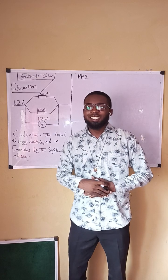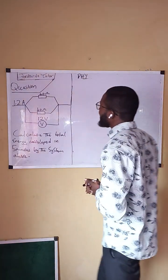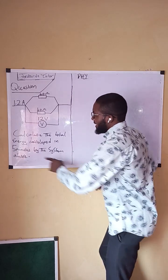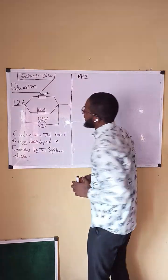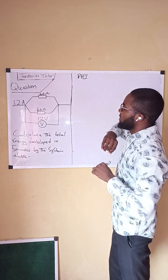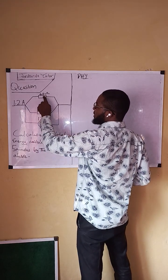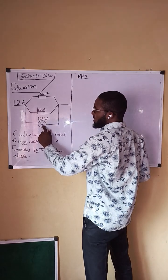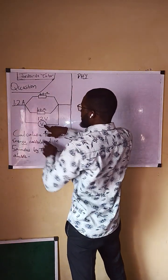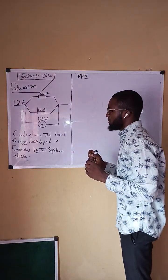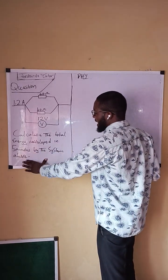Welcome back everyone. Today's tutorial is on physics. The question on the board says: calculate the total energy developed in five minutes by the system above. The diagram shows a circuit with a current of 1.2 amperes, two resistors of 40 ohms each, and a voltmeter measuring a potential difference of 12 volts. We are looking for the total energy developed in five minutes by the system.